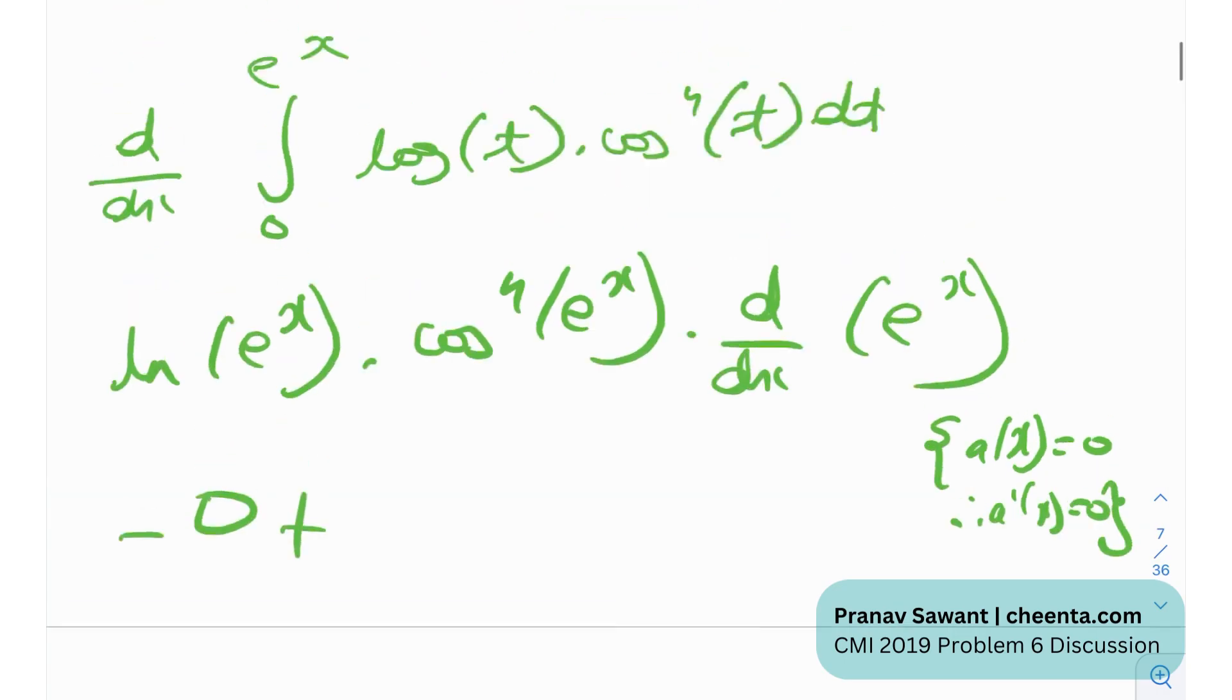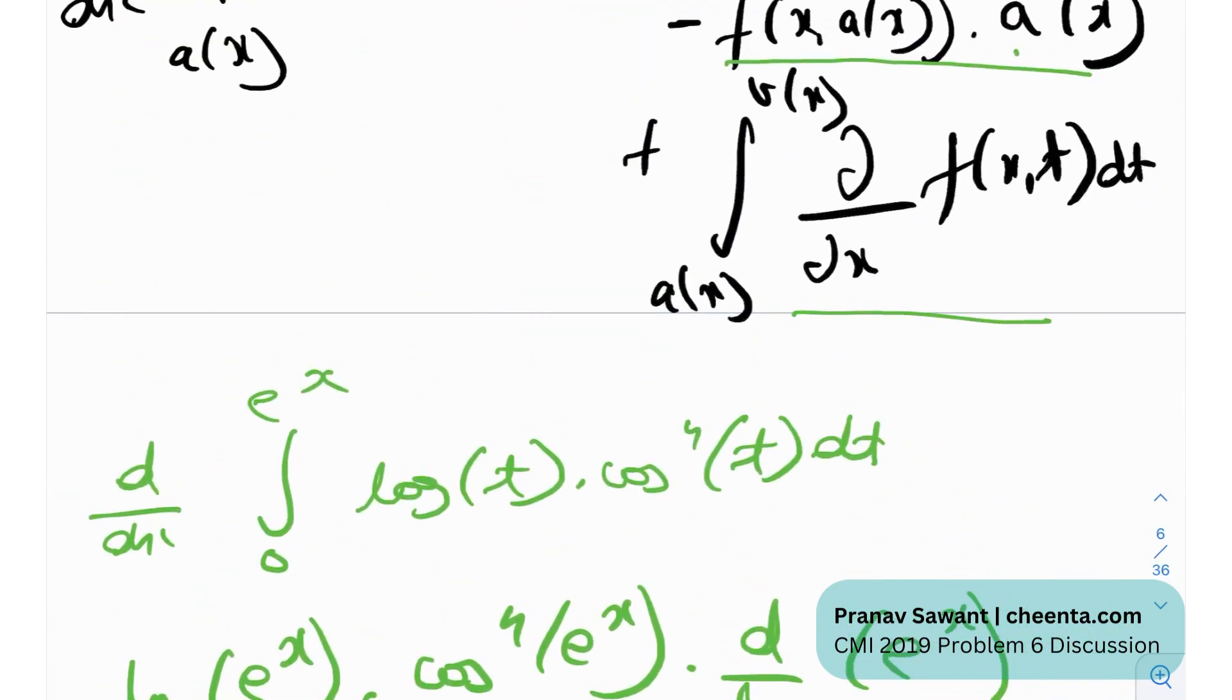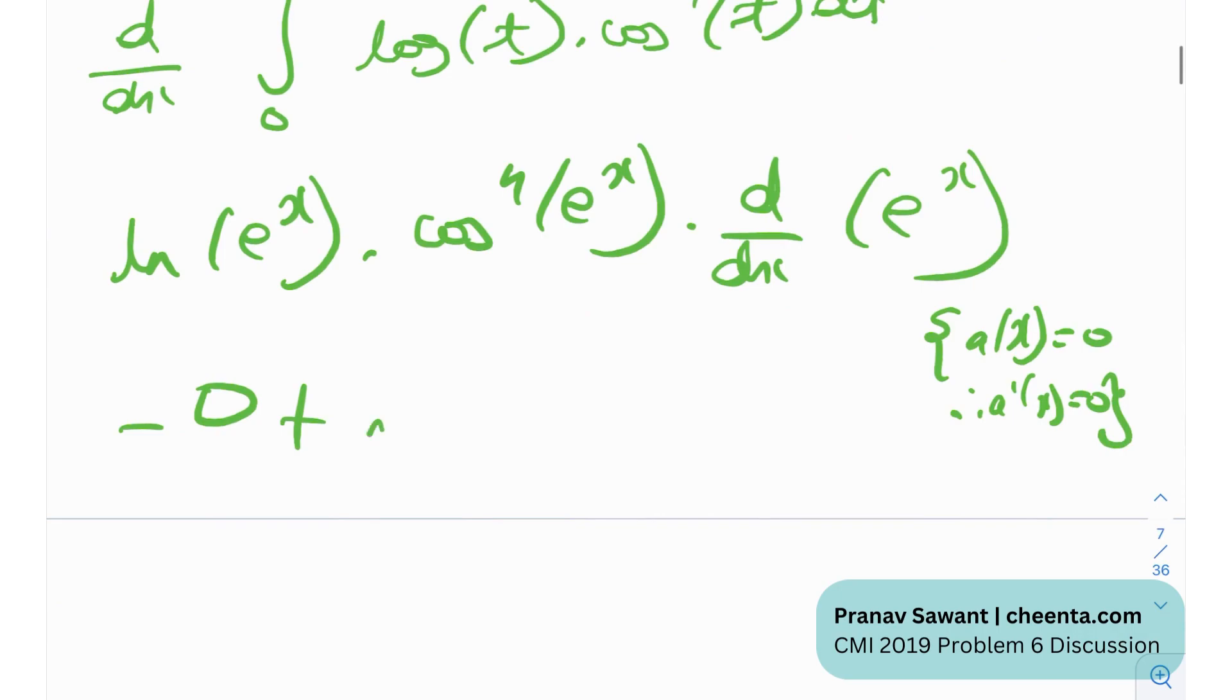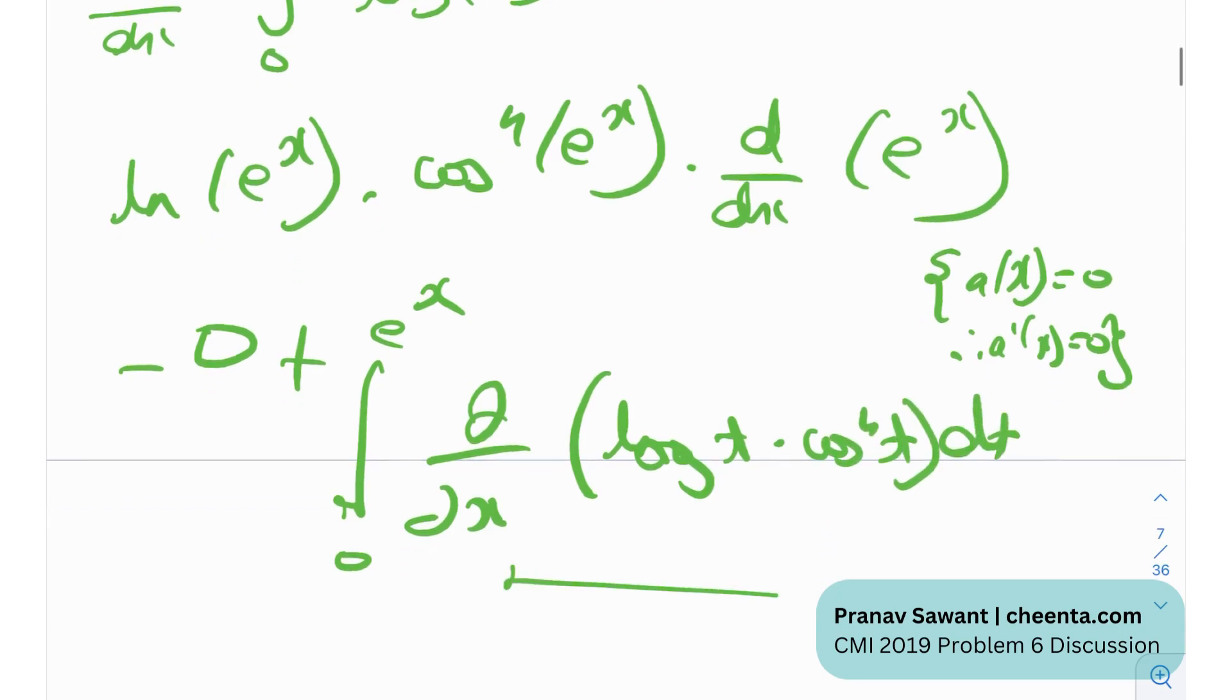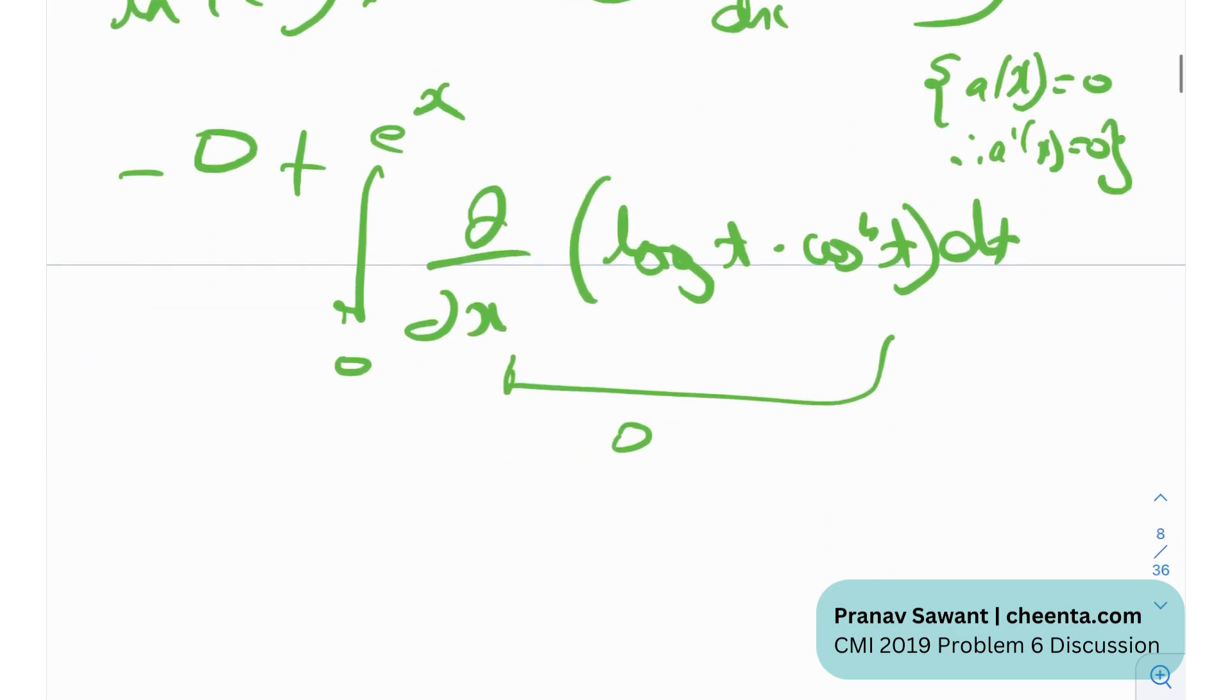Then, what do we have? The third and the final term that I had written over here, that is nothing but the integral from 0 to e raised to the power x of the del by del x of the logarithm of t times cosine raised to the power 4 dt. Now, this will obviously be 0 because it's the partial derivative. You don't have any terms in x, it will be 0. So essentially...